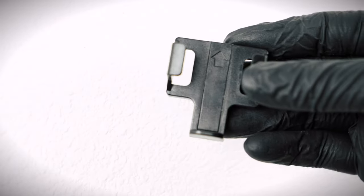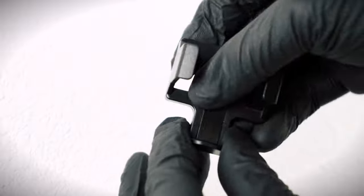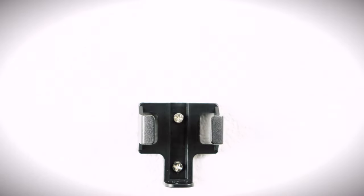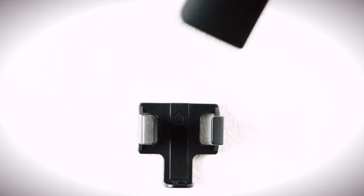An optional wall holder for the remote is included. Remove the cover and use the included screws to attach it to any wall. Reinsert the cover and place the remote in the holder.